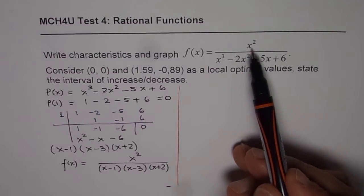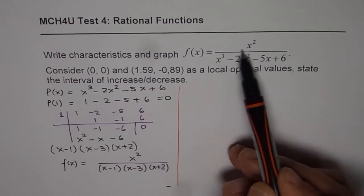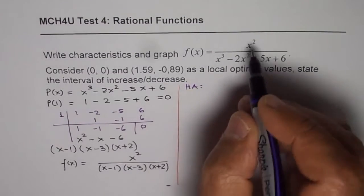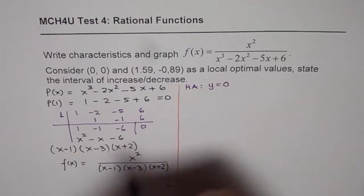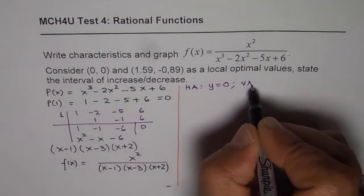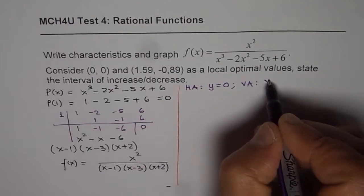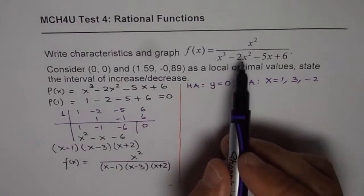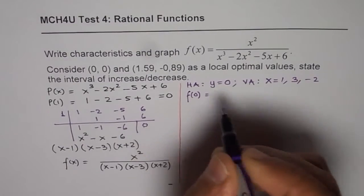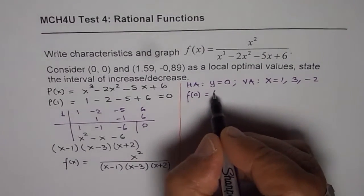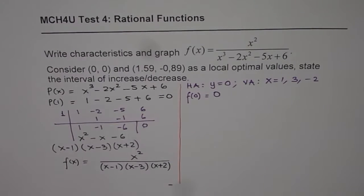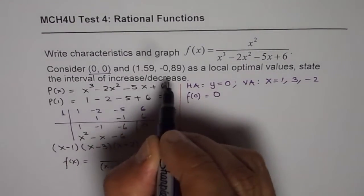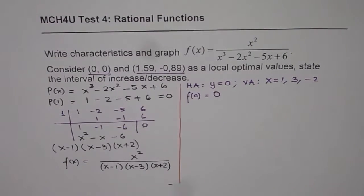The denominator degree is 3 and the numerator degree is 2, which means we have a horizontal asymptote at y equals 0. From the factored form, the vertical asymptotes are at x equals 1, x equals 3, and x equals minus 2. When x is 0, f(0) equals 0 over 6, which is 0 — so the origin is both the x-intercept and y-intercept. We are also given local maximum and minimum turning points.